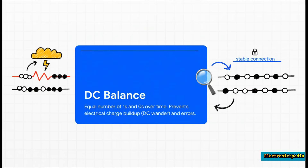Problem number two is something engineers call DC balance. If you send too many ones or too many zeros in a row, a tiny bit of electrical charge actually builds up on the wire. This is called DC wander, and it messes with the voltage levels, making it really hard for the receiver to tell a one from a zero. This causes errors, so keeping that electrical balance is absolutely crucial.